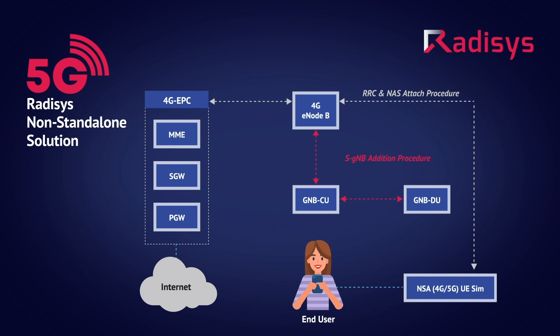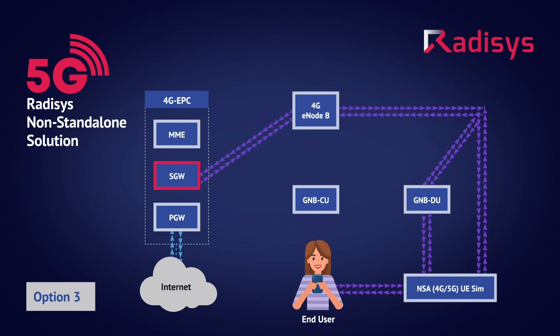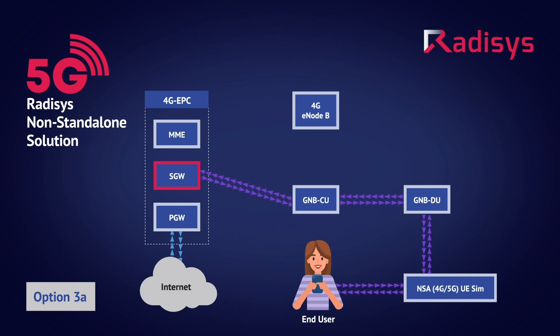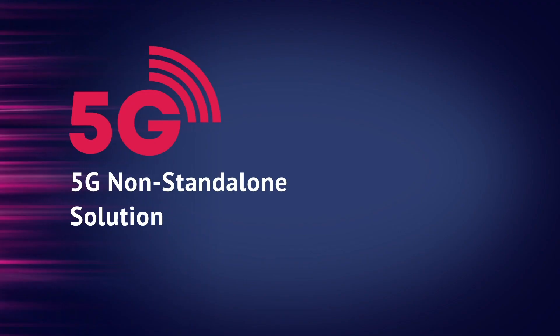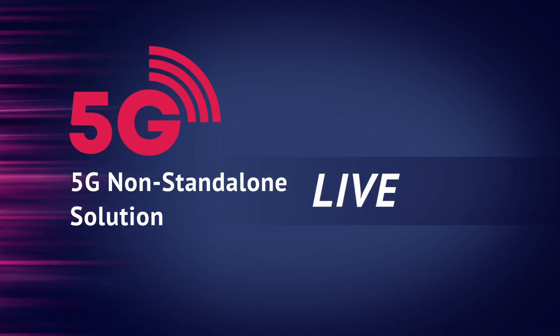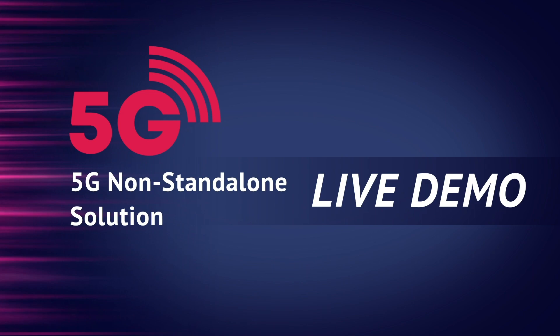To enable the 5G non-standalone services, a 5G fast path data flow is established from the data network to the end-user application, based on the supported 3GPP release compliant NSA options, namely Option 3, Option 3a, and Option 3x. Let's look at a live demonstration which focuses on the NSA Option 3a.